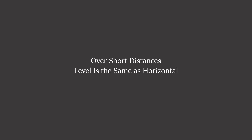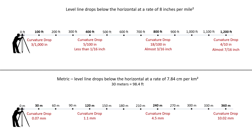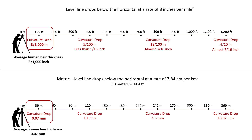I'm going to begin with: over short distances, level is the same as horizontal. Here are some curvature drop calculations based on 8 inches per mile squared, with the metric equivalent below. At 100 feet, the curvature drop is only three one-thousandths of an inch, and that is the same as the average human hair thickness.